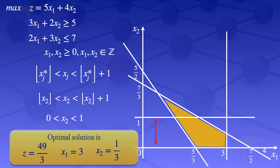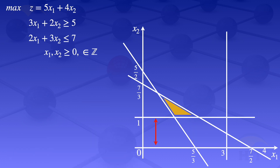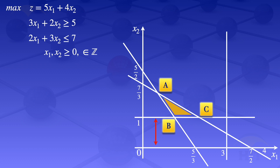When we exclude that region, the new feasible region is the one indicated. We are excluding the region between 0 and 1 for x2, but not excluding points lying on the line x2 equals 1 or x2 equals 0. The corner points of the new feasible region are A, B, C, D, and E — points D and E from the previous feasible region are still included since they lie on x2 equals 0 or x2 equals 1.